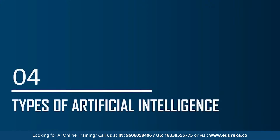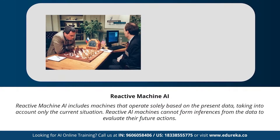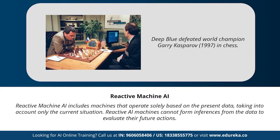Moving on to the different types of artificial intelligence. Based on the functionality of AI-based systems, AI can be categorized into four types. The first type is reactive machines AI — machines that operate solely based on present data and take into consideration only the current situation. Reactive AI machines cannot form inferences to evaluate future actions and can only perform a narrowed range of predefined tasks. An example is IBM's chess program that beat world champion Garry Kasparov.